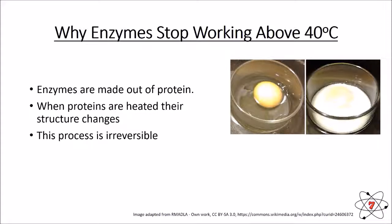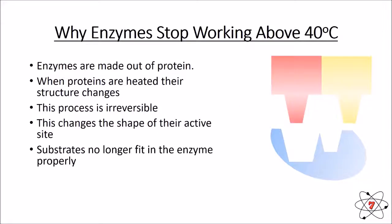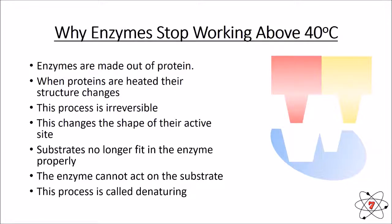So when we heat an enzyme, the changes to its shape are permanent. Our enzymes work because of their active site fitting the substrate perfectly — the lock and key mechanism. If the shape of that active site changes, just like melting a key in a flame, it will no longer fit the lock. So if our enzyme is heated, it changes shape and the substrate can no longer fit into the active site — the enzyme cannot act on the substrate at all. This process is called denaturing.